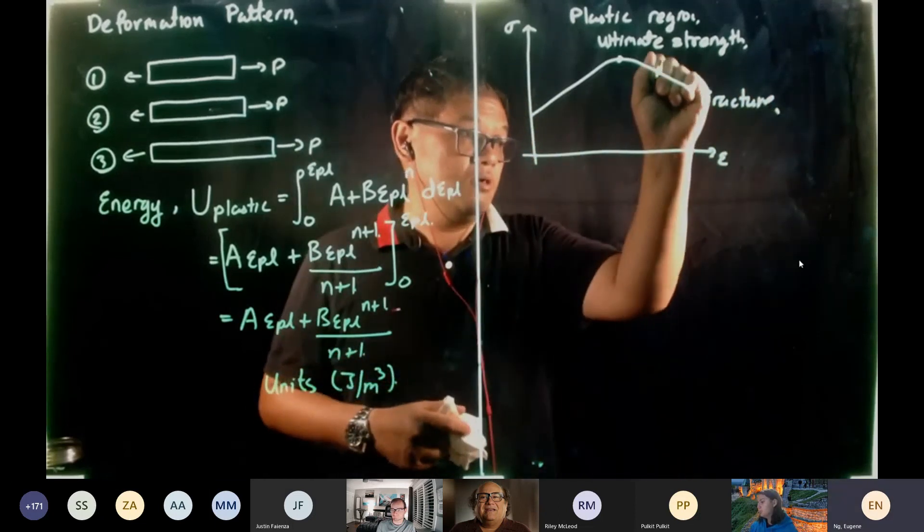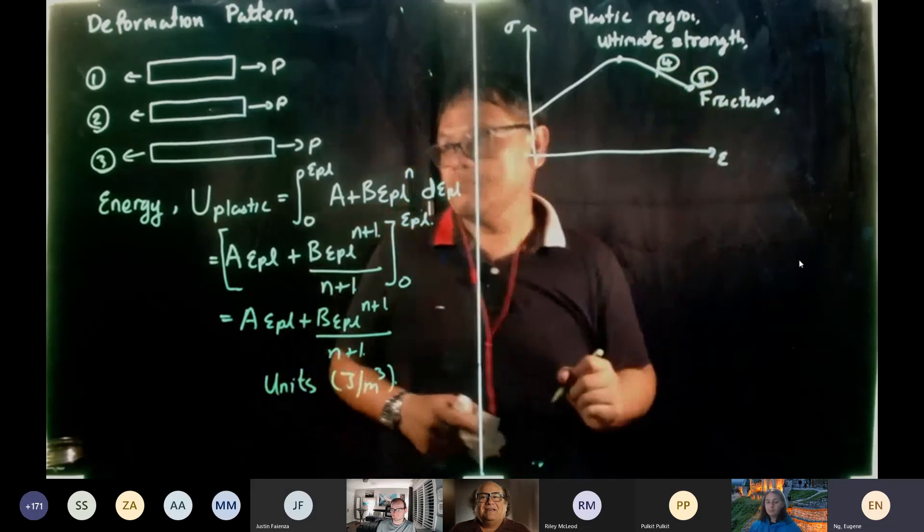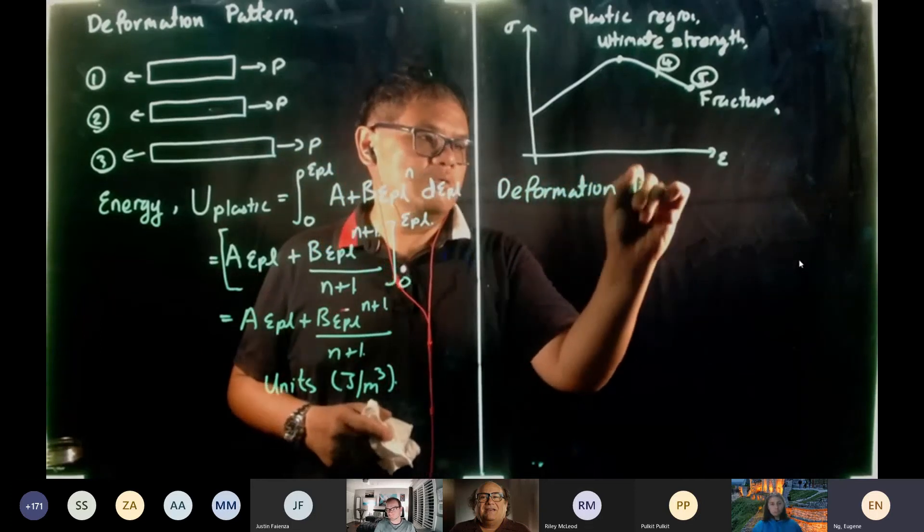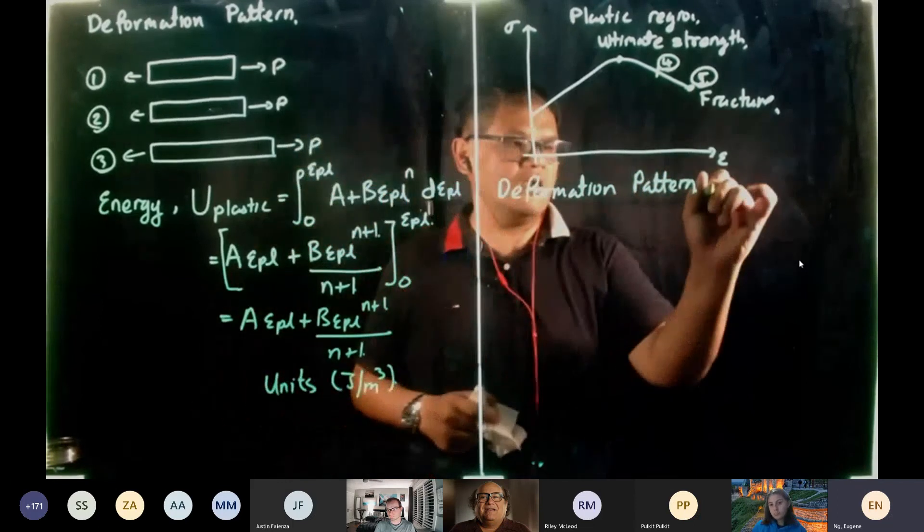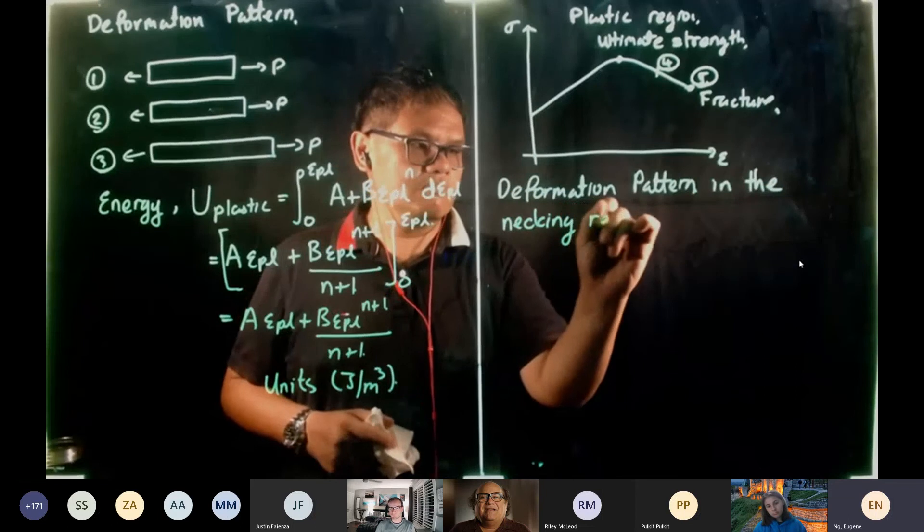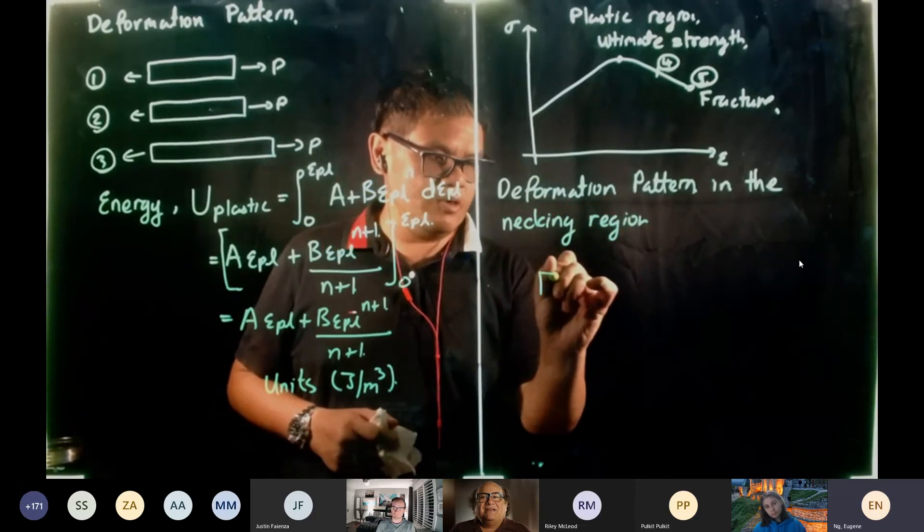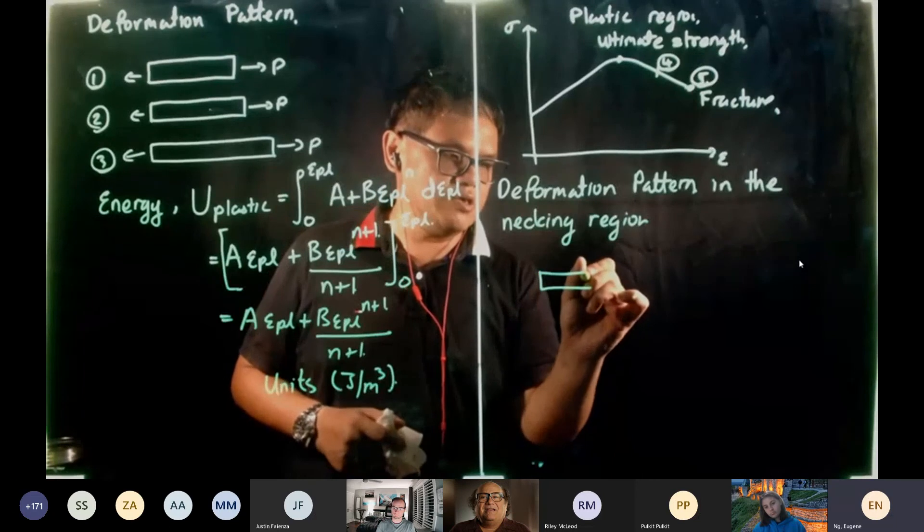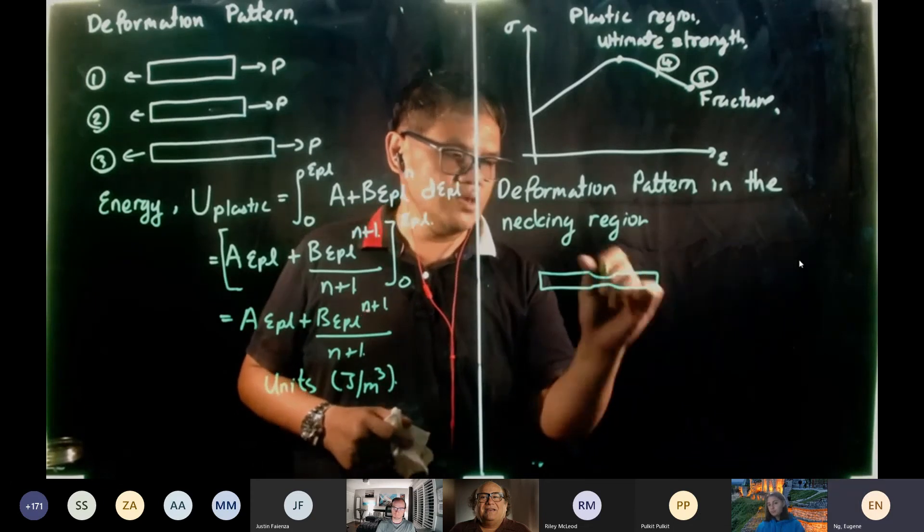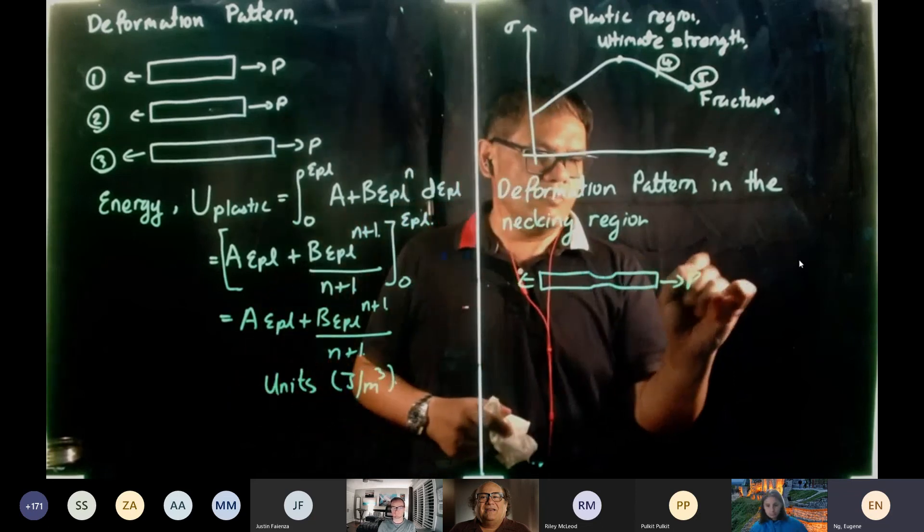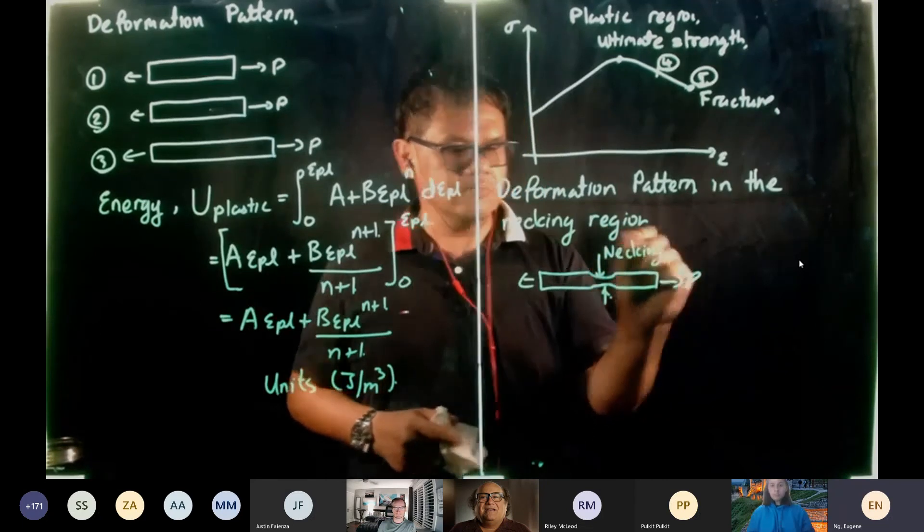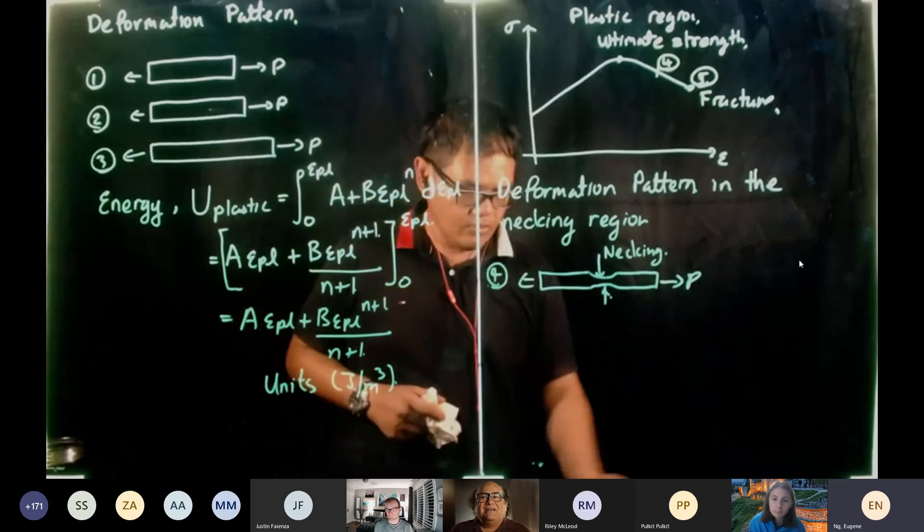And over here, this is your fracture. So I'm going to call this 4 and fracture is 5. So if we look at the deformation pattern in the necking region. So what you see now is you are able to physically observe a region where the cross section area does change. So this is your applied load. So the reduction of cross section area, this is what we call necking. So this is 4.